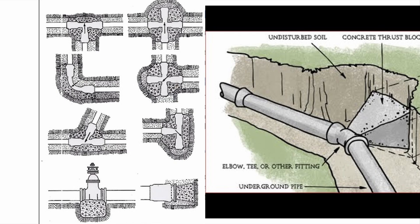Thrust blocks prevent buried piping from moving when pressure and thermal loads are applied. In effect, thrust blocks transfer the load from a pipe to a wider load-bearing surface. Thrust blocks are required where fittings are used to change direction, such as tees, elbows, wyes, caps, valves, hydrants, and reducers of buried piping systems. For large buried pipelines, the pressure thrust force becomes too large and is usually exerted on the elbows. Thrust blocks are added in those regions to avoid failure of piping components.